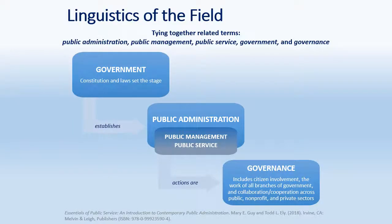So what do we mean really by public administration? In public discourse, people say the government is inefficient, or the government wants me to turn in a form, or the government charged me taxes. The first question I would ask is: which government? There are about 80,000 entities in the United States that can legally call themselves governments. Public administrators are public managers, public servants — we are the people that carry out government.